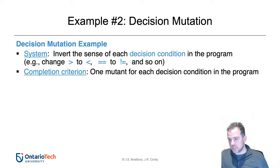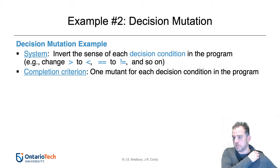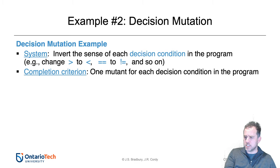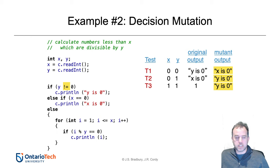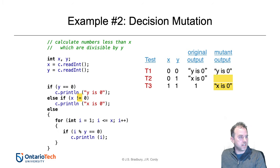Another type of mutation is decision mutation, where you go through and change all greater-thans to less-thans, equals to not-equals, and so on. Typically you take every comparison operator and systematically change it to each of its alternatives. Looking at our code, the first line used to say y equals zero; I've now changed it to not-equal zero, and all of my tests give different outputs. Moving to the next mutant, two of them get different outputs; for the last, one test gives a different output. These tests do pretty well.